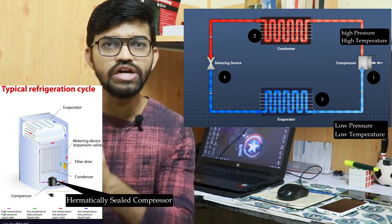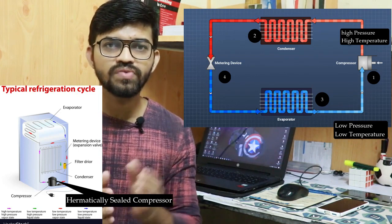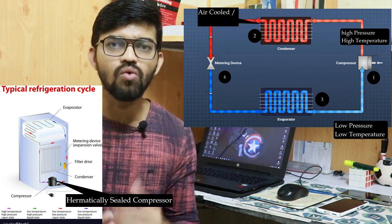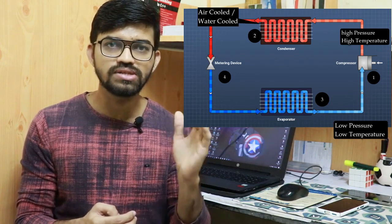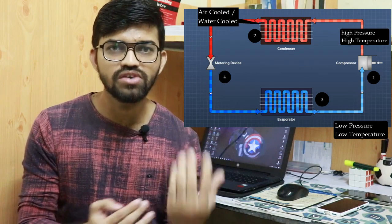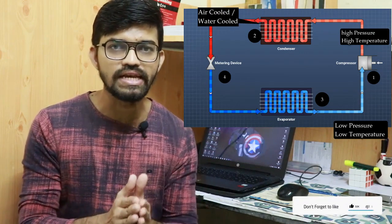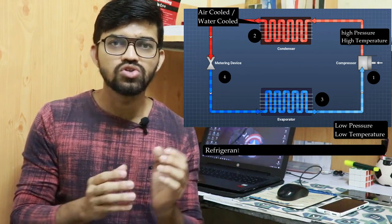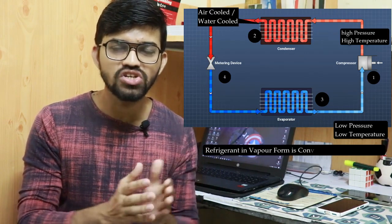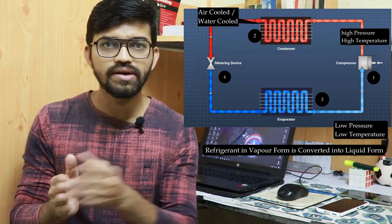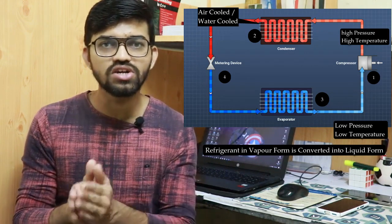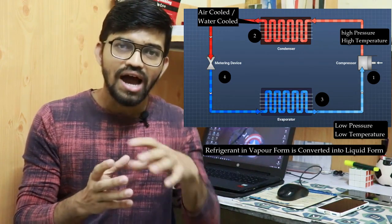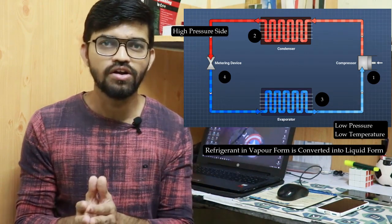The high pressure, high temperature refrigerant then flows into the condenser, which is a series of tubes. The condenser can be air-cooled or water-cooled. The refrigerant arrives in saturated vapor form and gets condensed in the condenser. The temperature gets reduced here while the pressure remains the same — this is the high-pressure side of the refrigeration system.